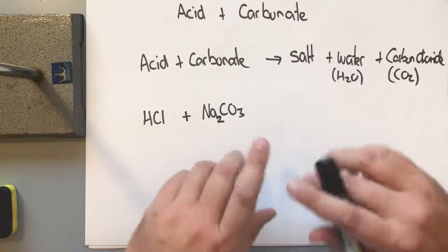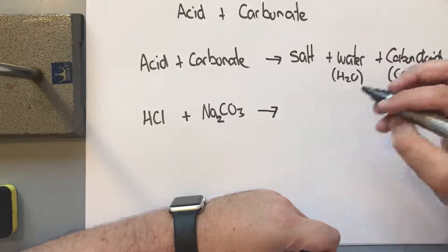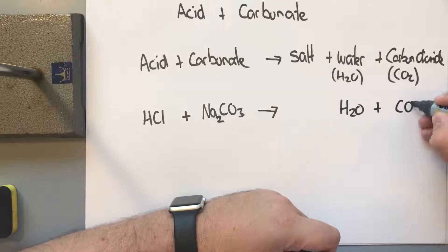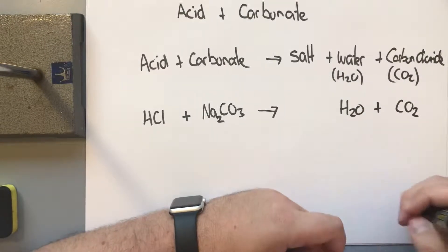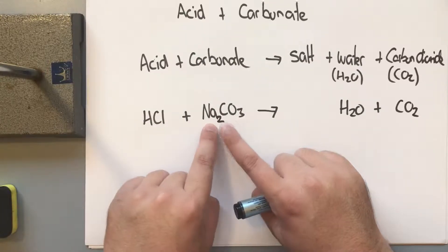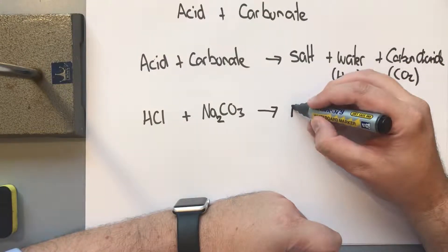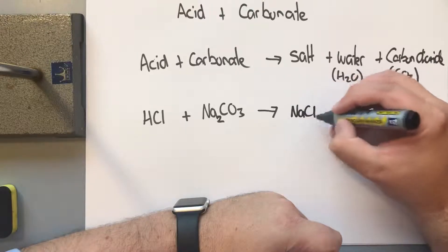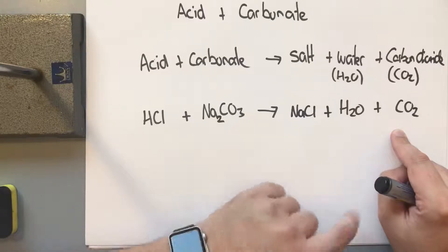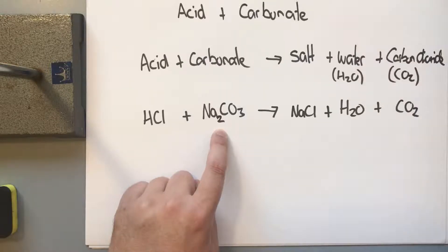So we have HCl plus Na₂CO₃, which produces water and CO₂. By taking out the water and the CO₂, that leaves us with sodium and chlorine, so we call that NaCl. Therefore, NaCl plus H₂O plus CO₂ is the product of reacting hydrochloric acid with sodium carbonate.